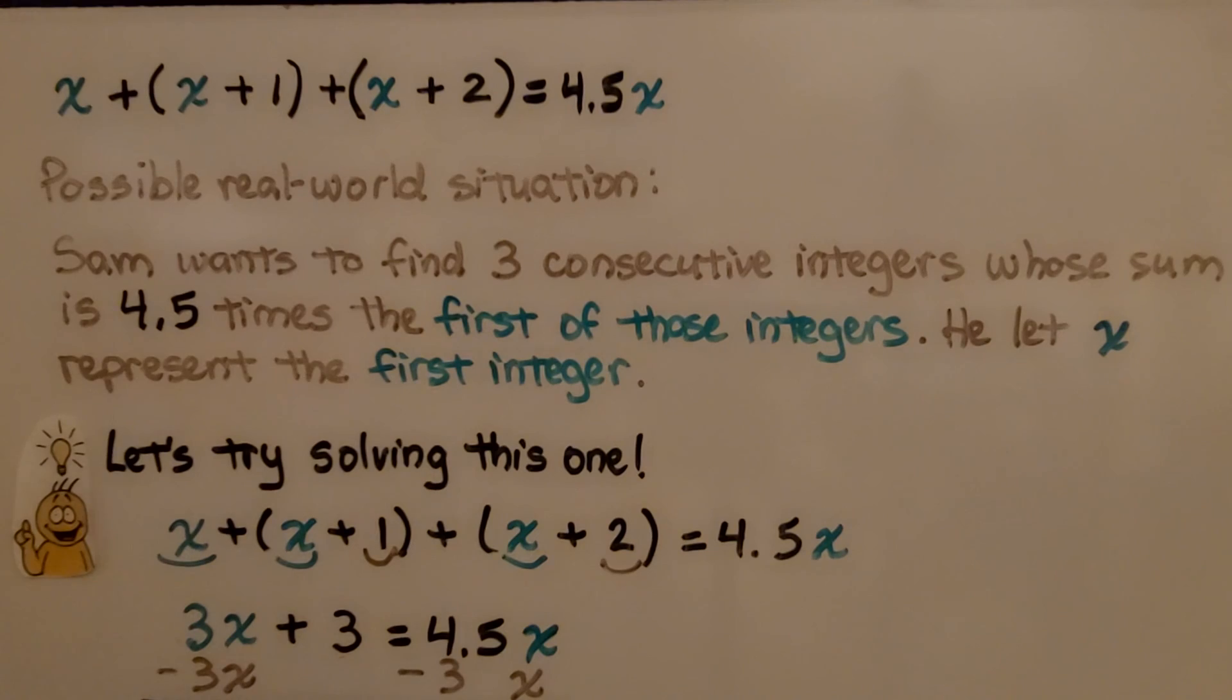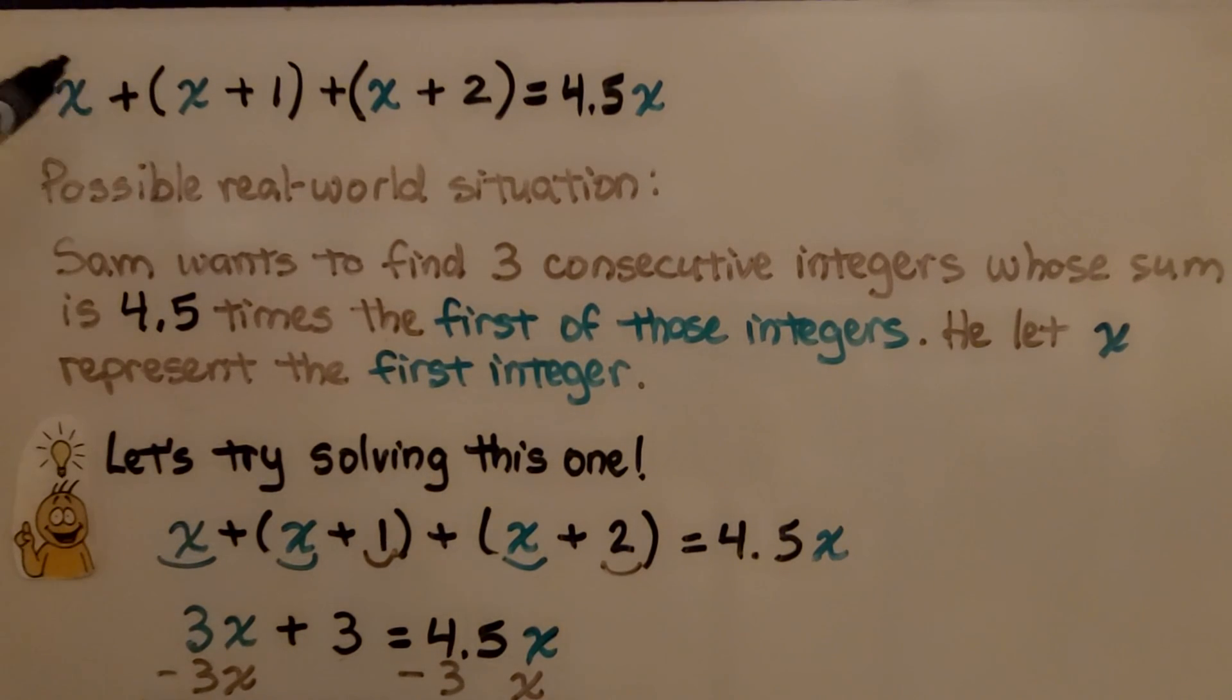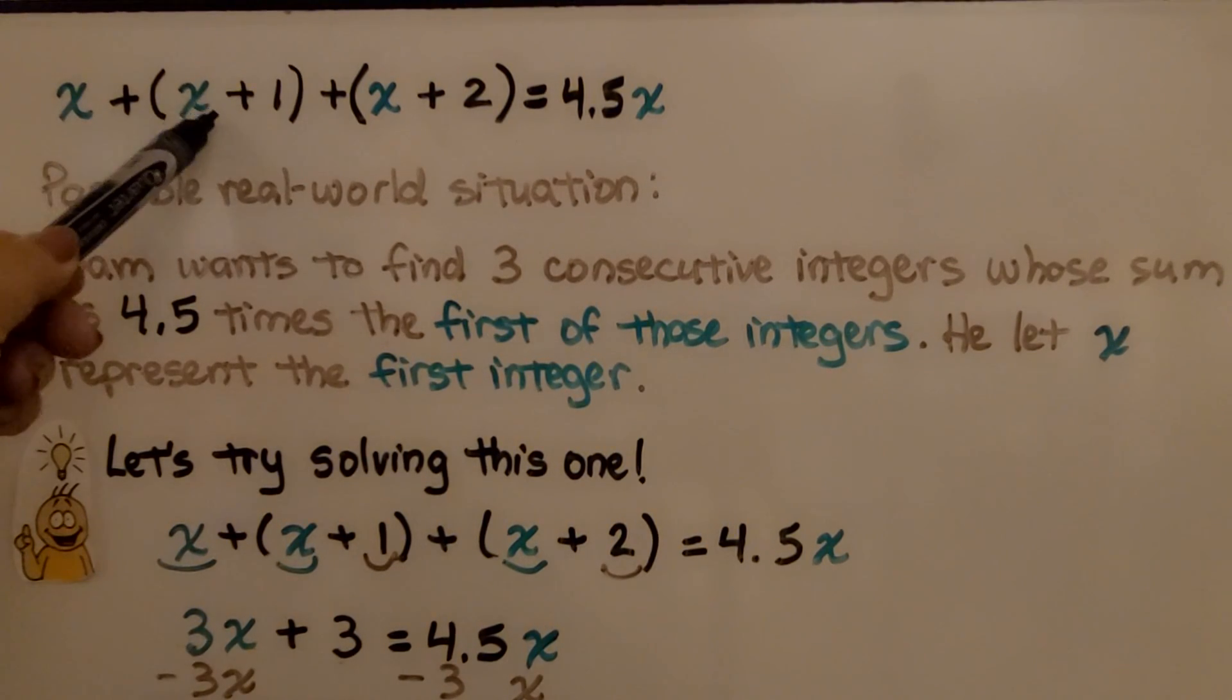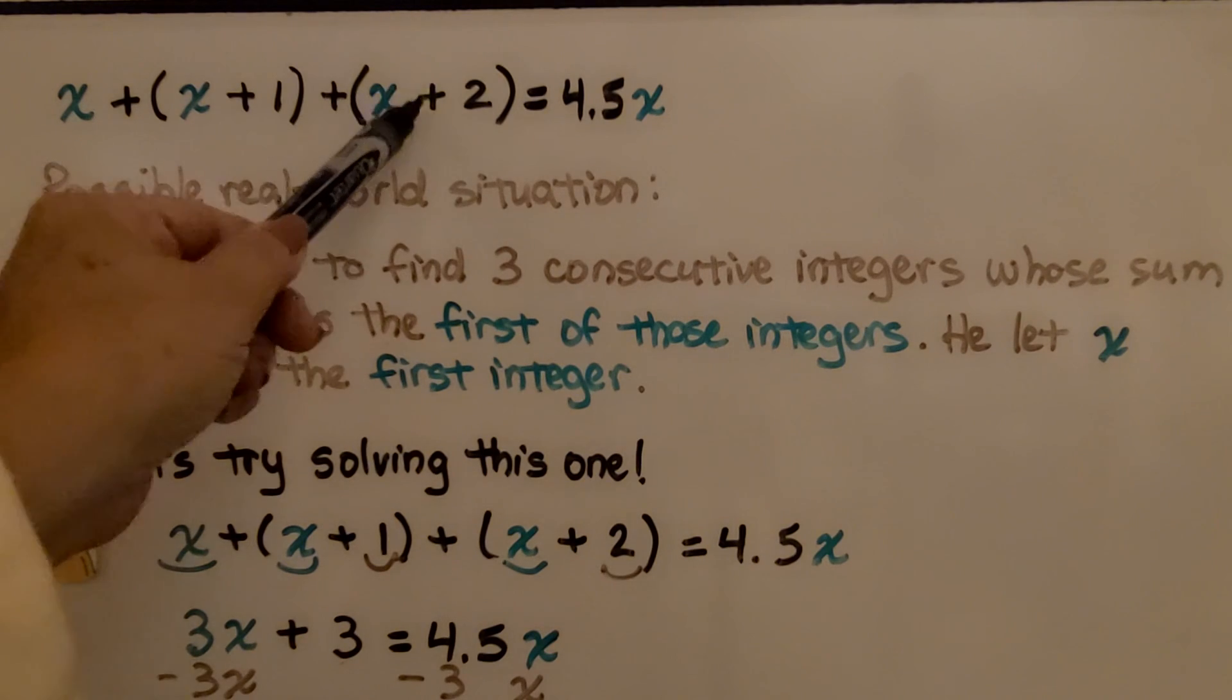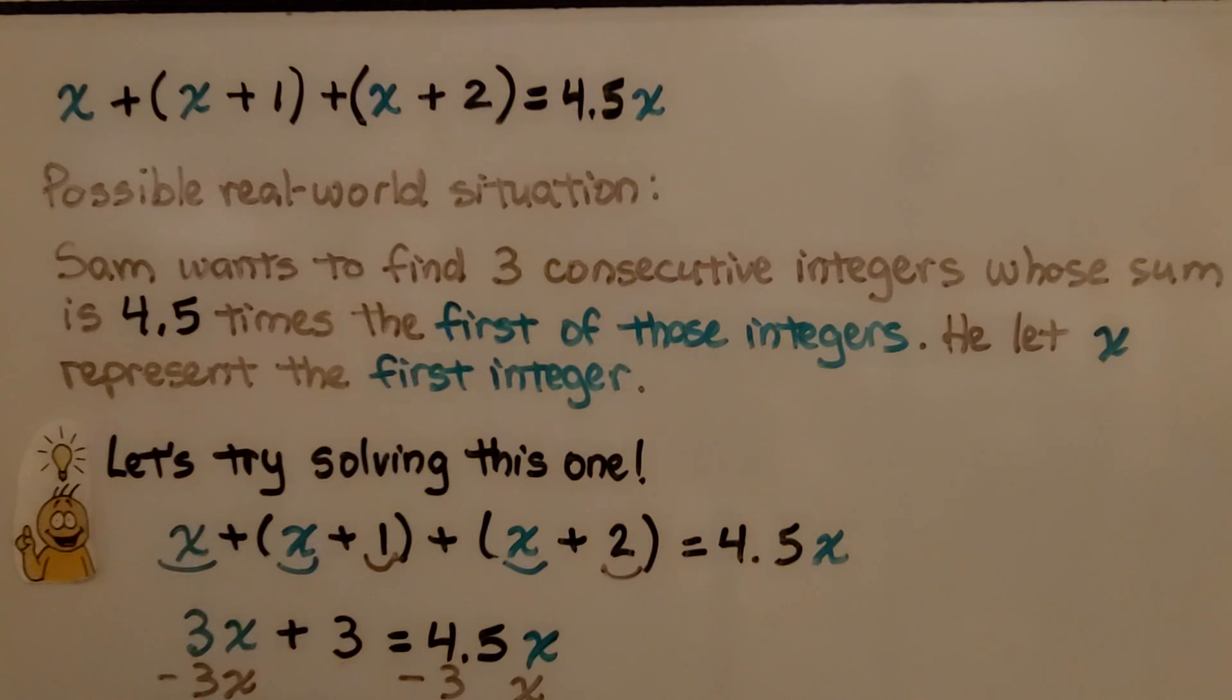Take a look at this equation. We have x plus whatever x is plus 1 plus whatever x is plus 2 equals 4.5x. A possible real-world situation would be Sam wants to find three consecutive integers whose sum is 4.5 times the first of those integers. He let x represent the first integer.